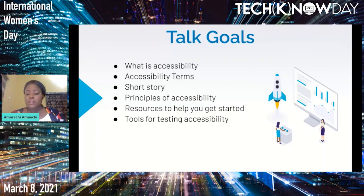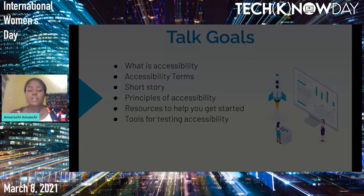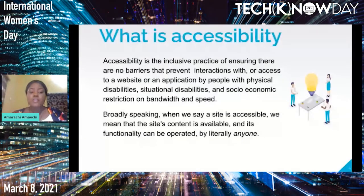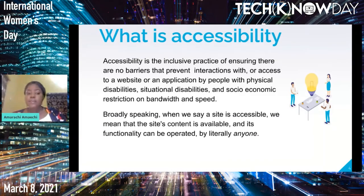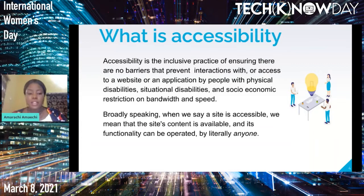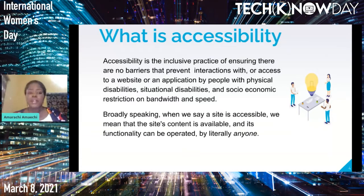Now let's talk about what accessibility is. Accessibility is the inclusive practice of ensuring there are no barriers that prevent interactions with or access to your website — not just the website, but an application — by people with physical disabilities, situational disabilities, and socio-economic restrictions on bandwidth and speed. Broadly speaking, when we say a site is accessible, we mean that the content and functionality are available and can be operated by literally anyone.